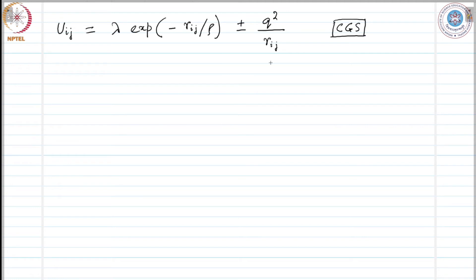For the ions we do not have gas phase data, which is why this form is better suited. In the sodium chloride structure, the value of u_i does not depend on whether the reference ion i is positive or negative. If the i-th ion is positive it will have attraction with negative atoms and repulsion with positive ones; if negative, the same symmetry holds — so it remains the same.